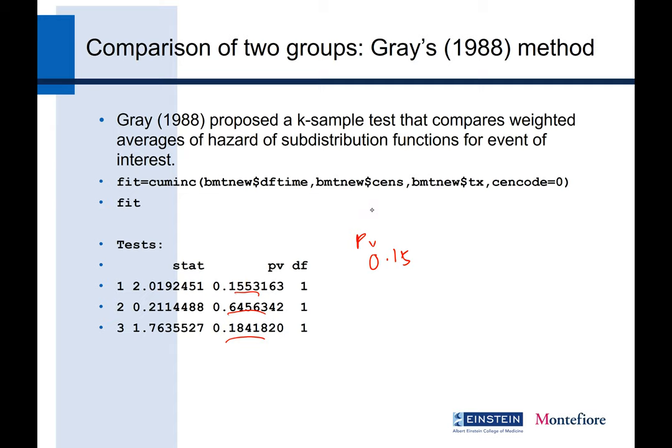You can also customize the cmprsk function — for example, if you want to analyze a specific event type or change the censoring encoding. If your censoring code is not zero but five, you can specify 'cencode = 5' and it will compute automatically with that encoding. That is a good feature of this package.